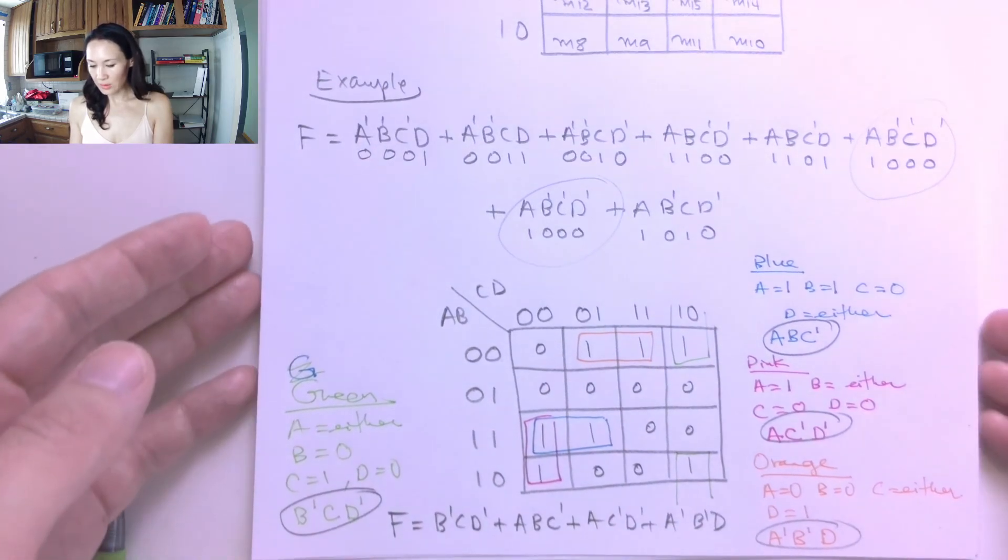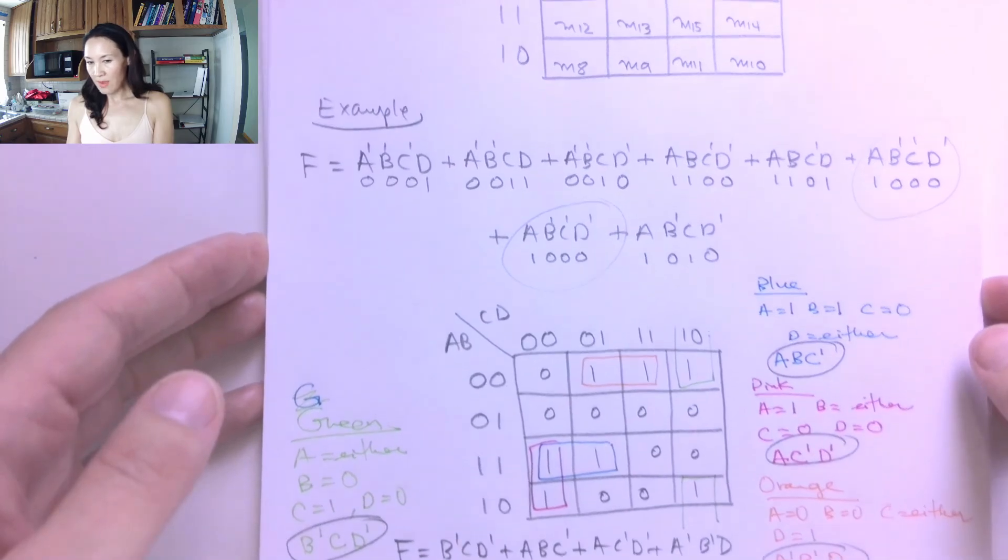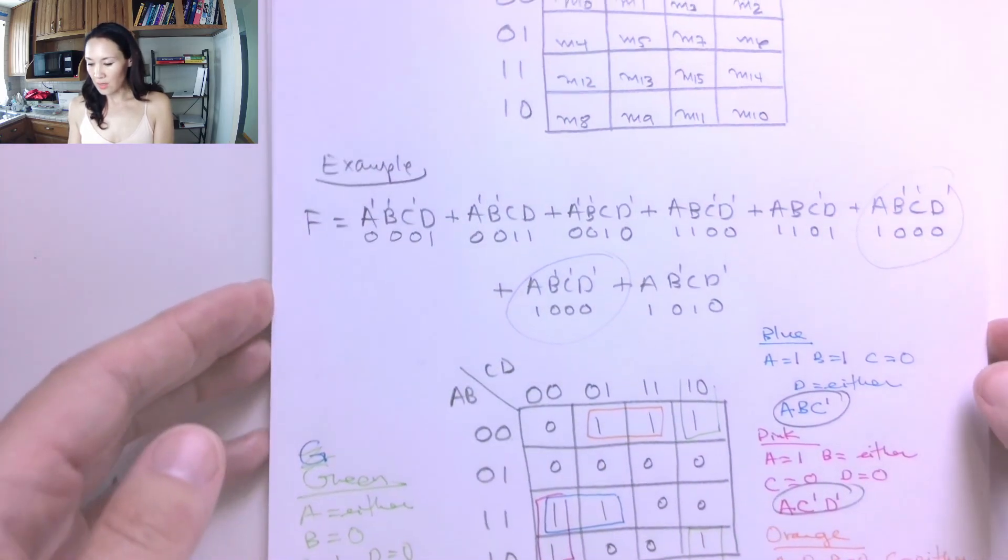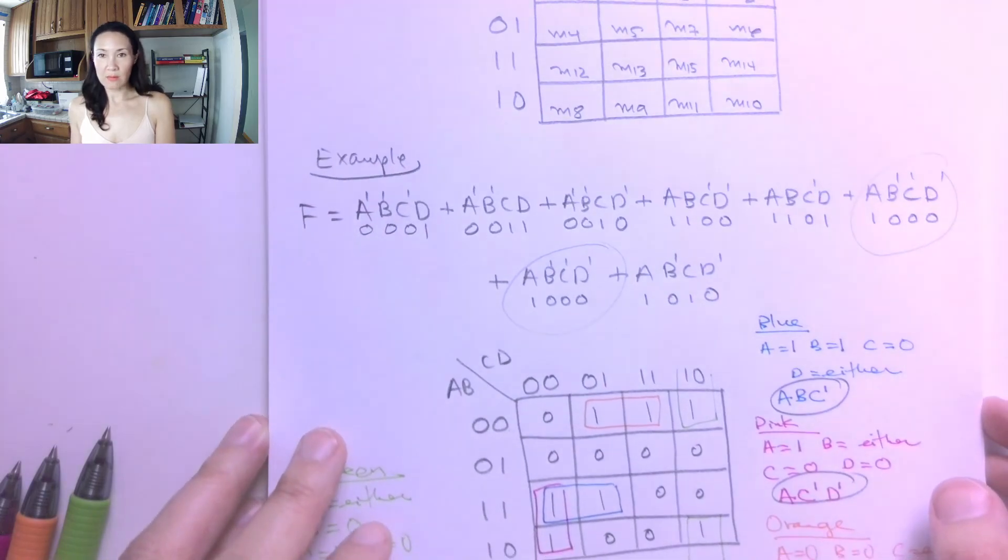So let me know if you have questions about making the four-input Karnaugh map. In the next video, I'll show you another example of making a four-input Karnaugh map from a min-term and max-term representation.